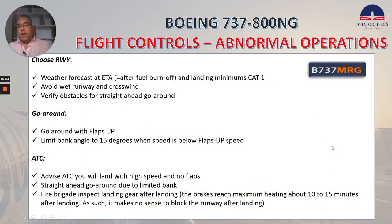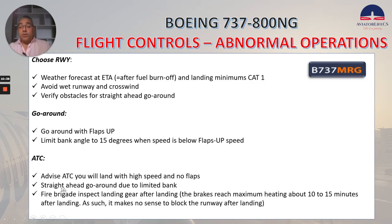A few comments from the MRG: check runway weather forecast at ETA after fuel burn-off and landing minimums — scat one. Avoid wet runway and crosswind. Verify obstacles for straight-ahead go-around. Go-around with flaps up — limit bank angle to 15 degrees when the speed is below flaps-up speed. You can advise ATC you will land with high speed and no flaps. Plan a straight-ahead go-around due to limited bank angle. Talk to fire services for them to inspect the landing gear after landing. The brakes reach maximum heating about 10 to 15 minutes after landing — as such it makes no sense to block the runway after landing.